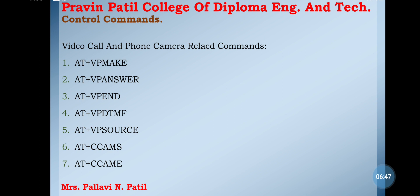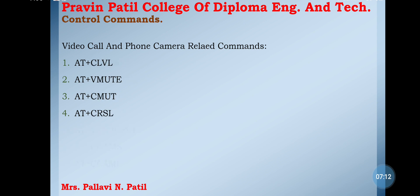The next is AT CC AMS — this command is used to start the camera. Make sure the sensor is existing and connected well. The camera must be started before taking a picture or recording video. The next is AT CC AMS — this command is used to stop the camera. This covers the video call and phone camera related commands.